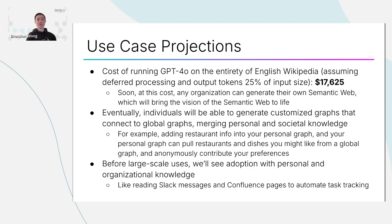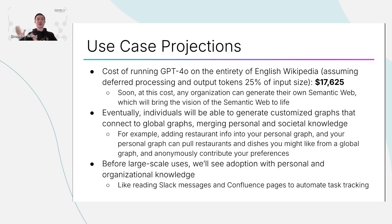I do expect that something like the semantic web will emerge in the next few years as a result of declining costs and improving accuracy of LLM-based graph generation. Eventually the cost will fall so low that this might become useful for a bunch of organizations and individuals who want to generate customized graphs for their particular purposes. The really interesting thing is you could do so in a way where your personal graph connects to global graphs, merging personal and societal knowledge. For example, you could add information about restaurants and dishes you like into your personal graph, which could then look out at the global graph and pull restaurants and dishes you might like.